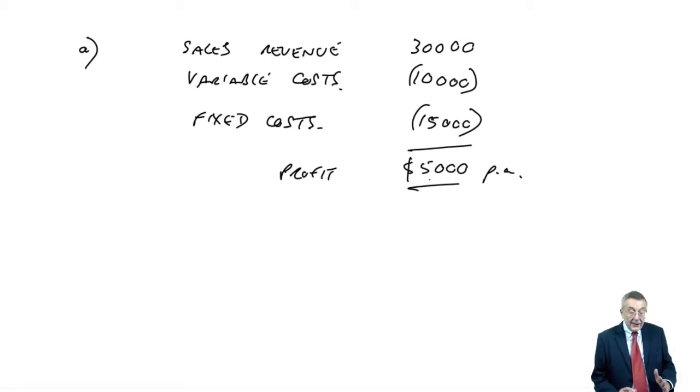Except, of course, those are all estimates. That's assuming we do sell 1,000 units. If we sell more, fairly obviously more profitable. If we sell less, less profitable. It's assuming we sell at £30 a unit, assuming fixed costs will be £15,000. The variable costs are £10. They're all assumptions or forecasts. And the problem is, of course, if any of those turn out to be wrong...